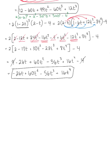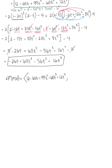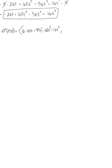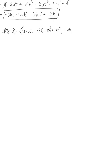So we officially have our parametrized vector field. Therefore, vector f of r(t) is defined by the components: 12 minus 60t plus 99t squared minus 60t cubed plus 12t to the fourth as the first component, and minus 26t plus 60t squared minus 56t cubed plus 16t to the fourth as the second component.